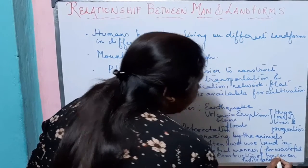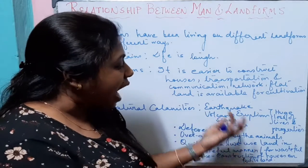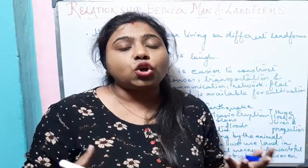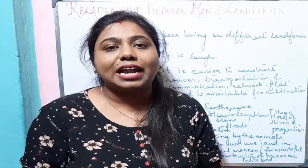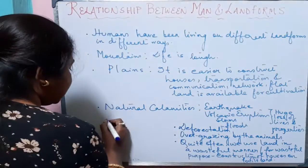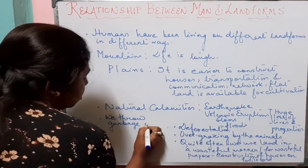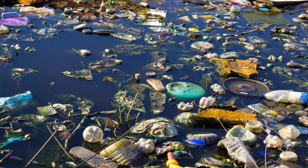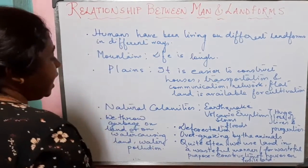We often use land in a wasteful manner, such as construction of houses on fertile land. Fertile land is land which is suitable for cultivation of different crops. Sometimes we construct houses on fertile land, while barren and infertile wasteland — where cultivation cannot be done — is left as it is. We are utilizing the fertile land that is available for cultivation. We also often throw garbage on land or in water, causing land and water pollution and affecting our environment.